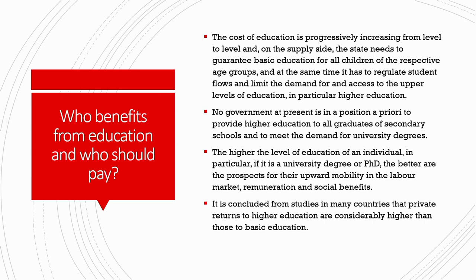At the same time, the state has to regulate student flows and limit demand for access to upper levels of education, in particular higher education, because it is not necessary that everybody moves towards higher education. Every level of education has its own goals and responsibilities. No government at present is in a position to provide higher education to all graduates of secondary schools and meet the demand for university degrees. The higher the level of education of an individual, in particular a university degree or PhD, the better are the prospects of upward mobility in the labor market, remuneration and social benefits. There are intergenerational benefits to higher education, with higher returns for future generations as well.